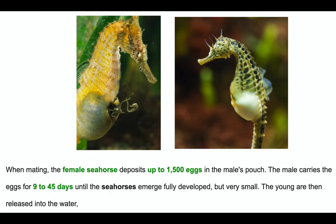Before finishing, I want to show a very nice picture. Most of us think that in higher animals only females get pregnant. But for the seahorse, after mating the female deposits up to 1500 eggs inside the male's pouch, and the male seahorse carries the eggs for 9 to 45 days until the baby seahorses are fully developed inside the pouch. Then the young are released into the water.